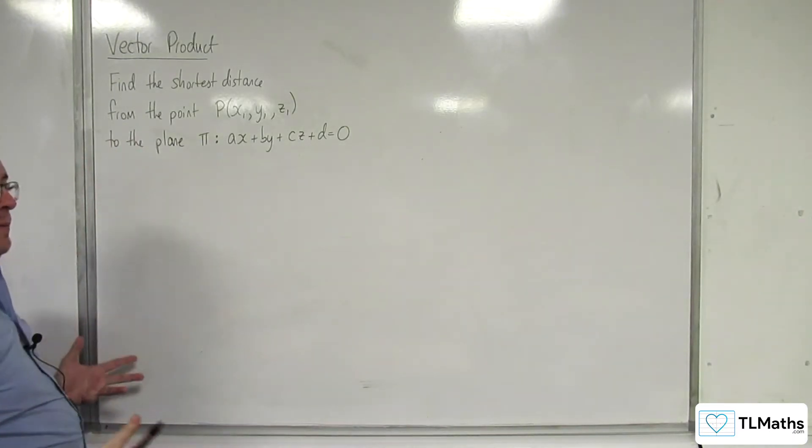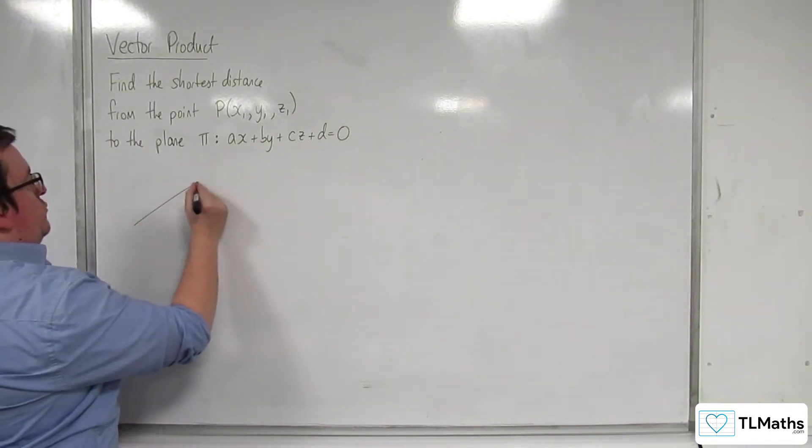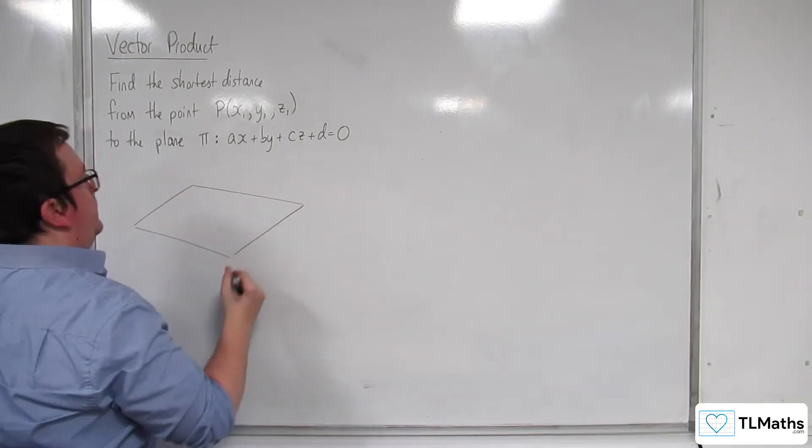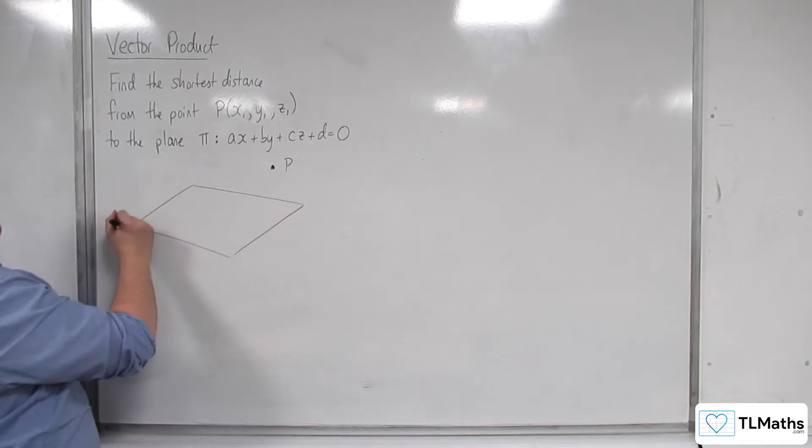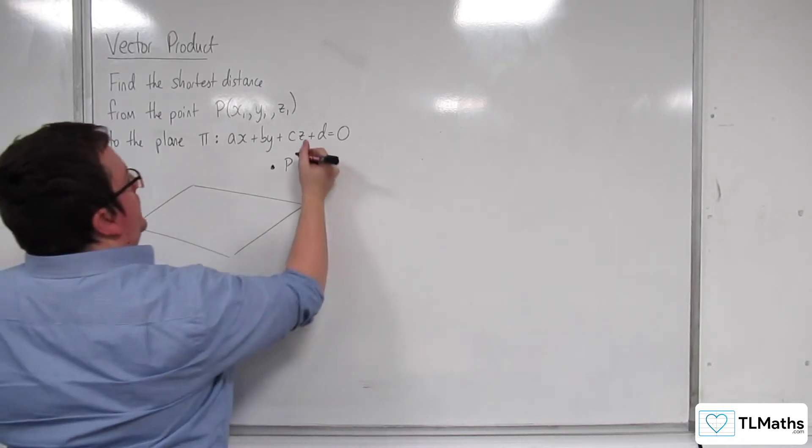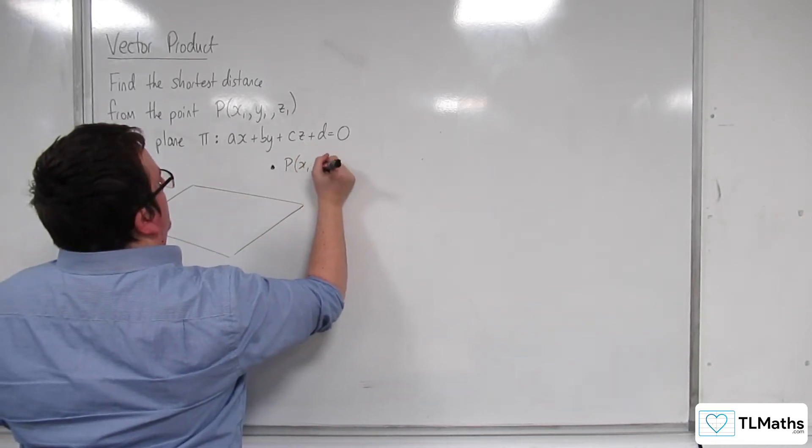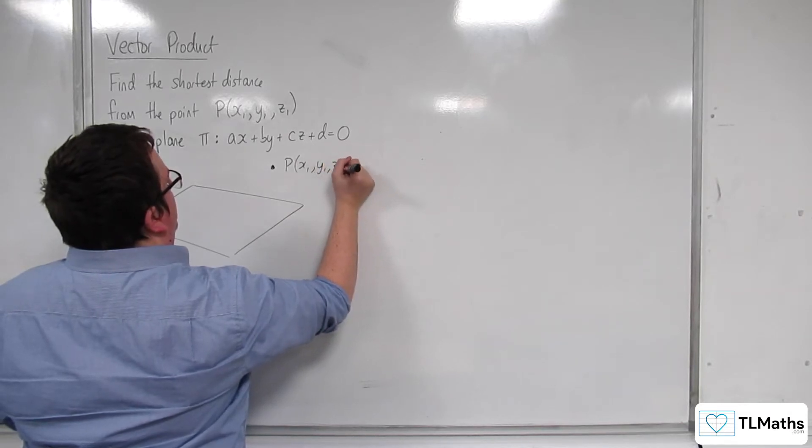The first thing I'm going to do is draw a diagram so we can visualize what's going on. So here is the point P, here's the plane pi. So x1, y1, z1.